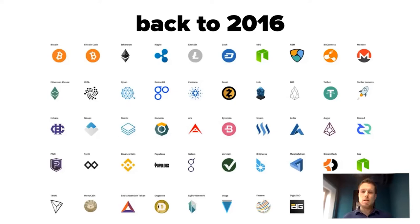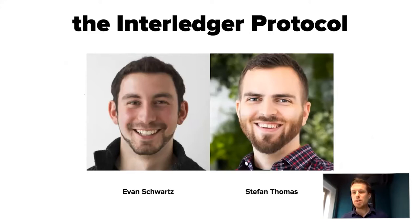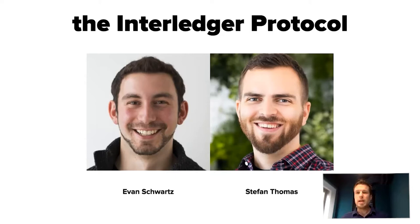That's something two guys at Ripple — Stefan Swartz and Stefan Thomas — also saw. People may know Stefan Thomas recently because he owns 7,000 Bitcoin but lost his password, with only two chances left. He was back then the CTO at Ripple. They saw the problem with sending money from one wallet to another where the currency was different, and wrote a paper about fixing payments between wallets. That paper was called 'A Protocol for Interledger Payments.'